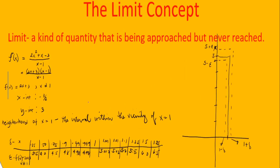For the given function (2x² + x − 3) / (x − 1), when you factor it out you get (2x + 3)(x − 1) / (x − 1). So f of x simplifies to 2x + 3.